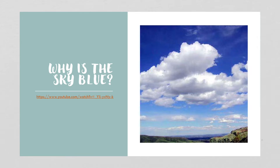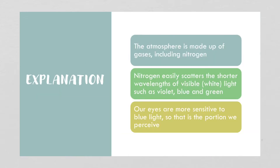So why is the sky blue? Basically the explanation is this: the atmosphere is made up of gases, and those gases include nitrogen. Nitrogen easily scatters the shorter wavelengths of visible white light — so that would be violet, blue, and green. But our eyes are much more sensitive to blue light, so that's the portion of the spectrum that we perceive. That's why the sky appears blue.